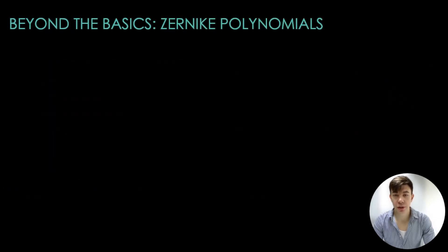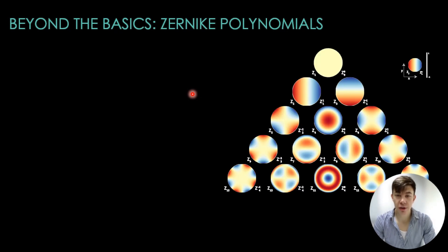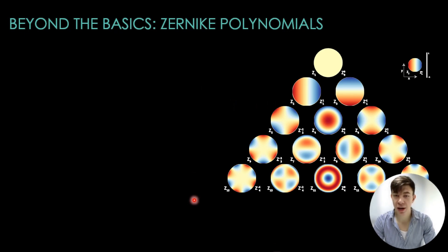While we explored individual aberrations like defocus and astigmatism, real-world optical systems often exhibit a combination of imperfections. That's where Zernike polynomials come to the rescue. Think of Zernike polynomials as a set of mathematical building blocks that we can use to build a model of any complex wavefront distortion.